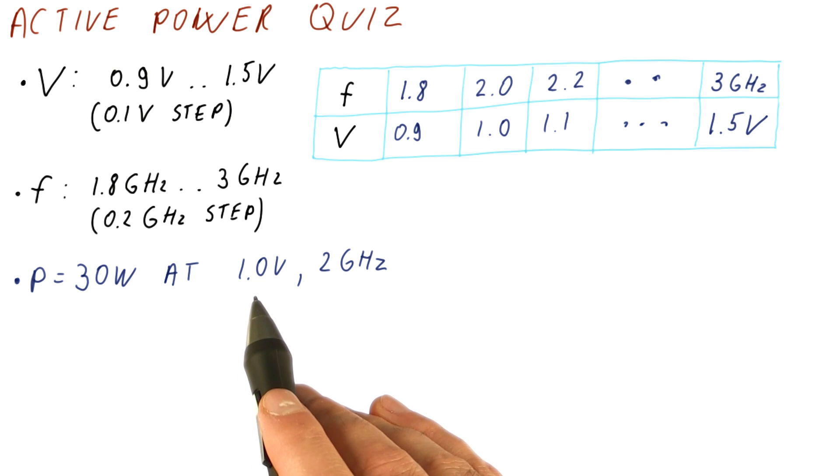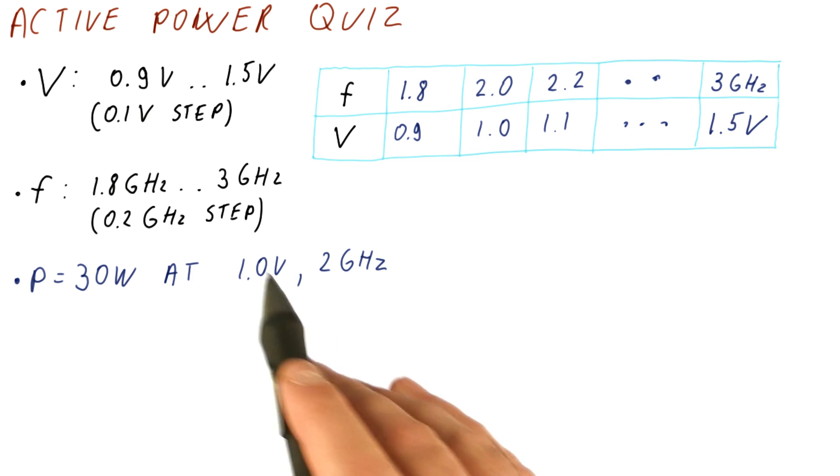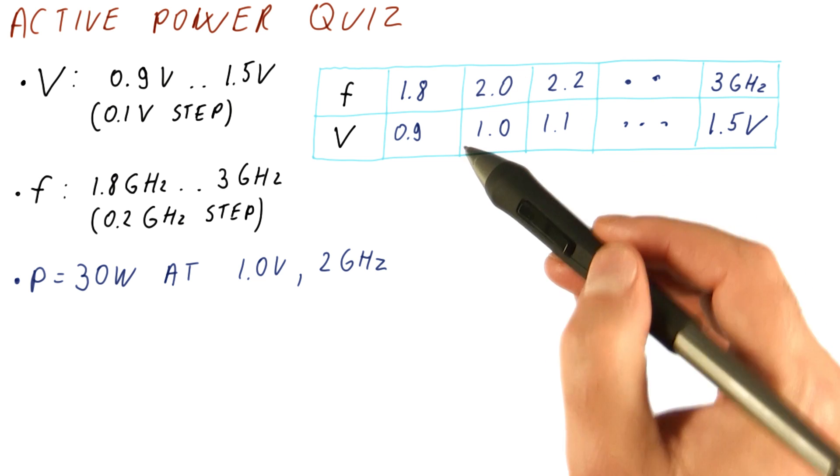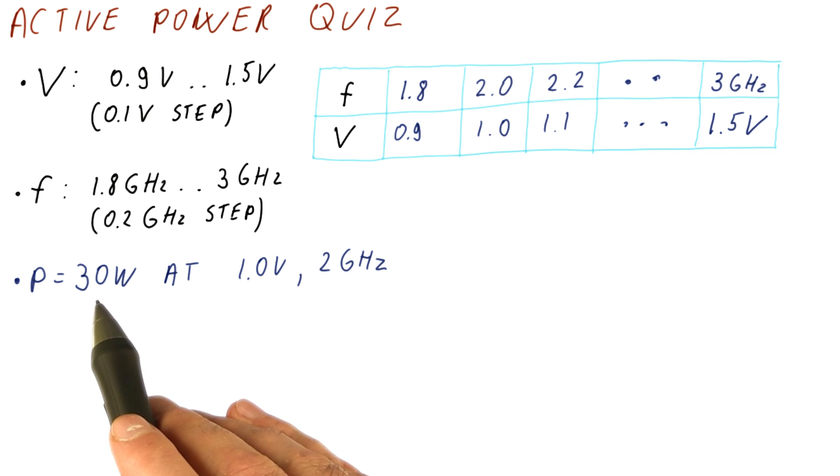Let's say also that we have measured the power consumption at 1 volt and 2 gigahertz, this setting here. And we have found that the processor consumes 30 watts of power.